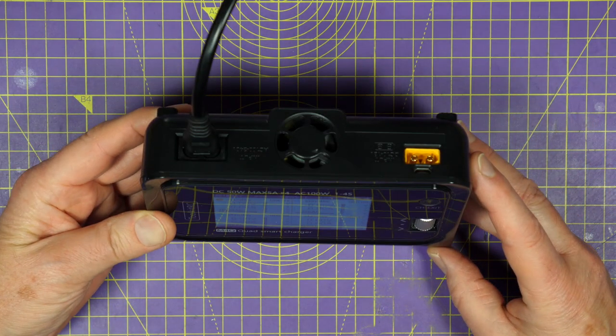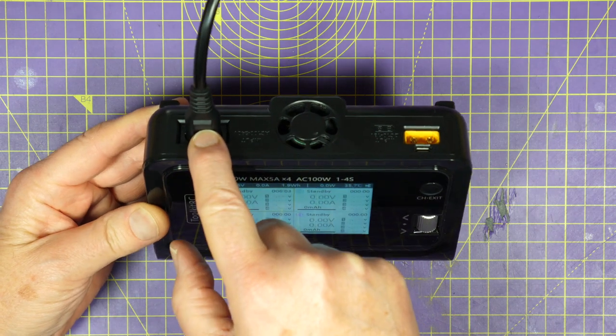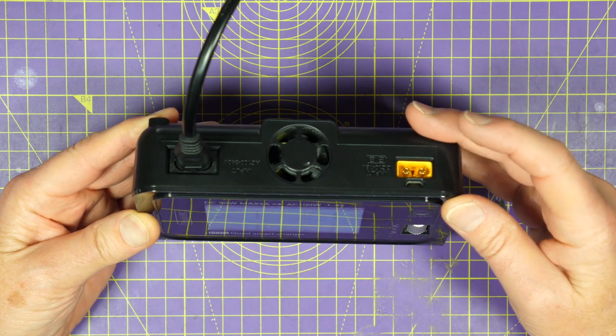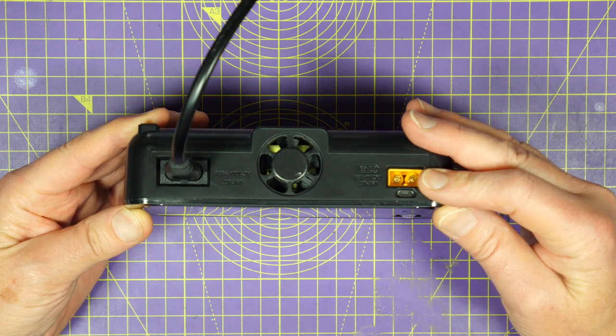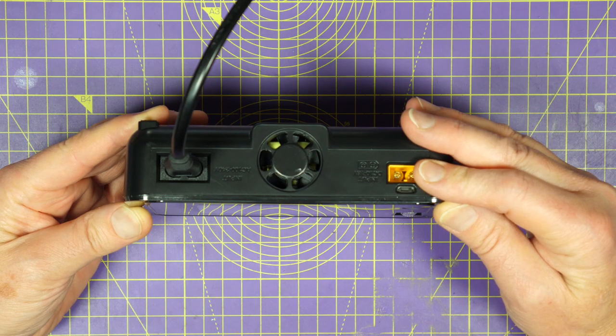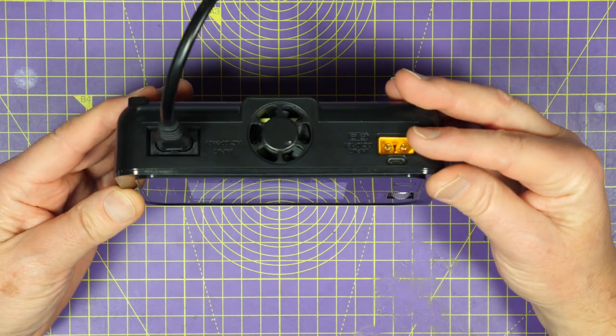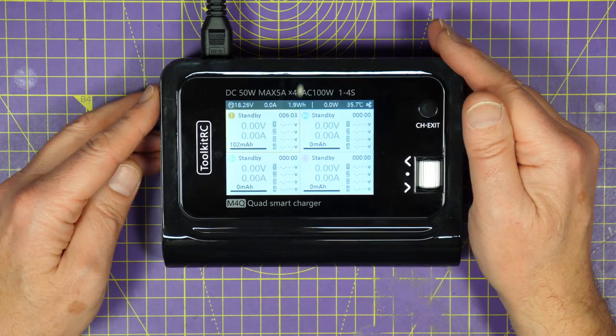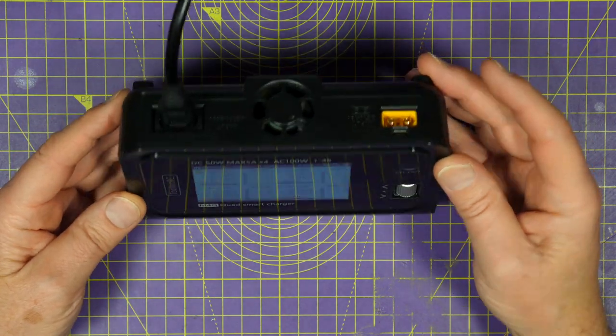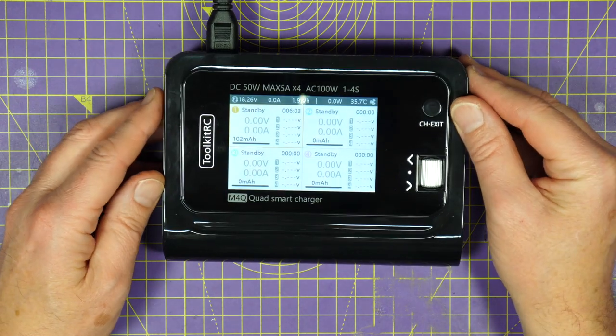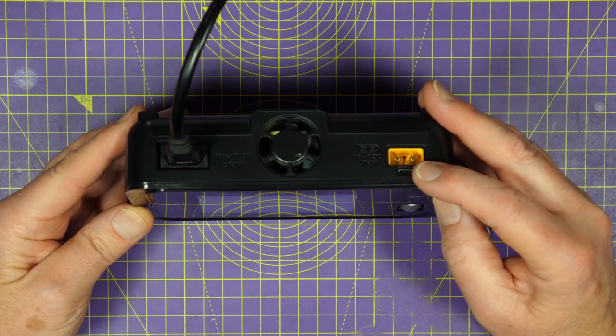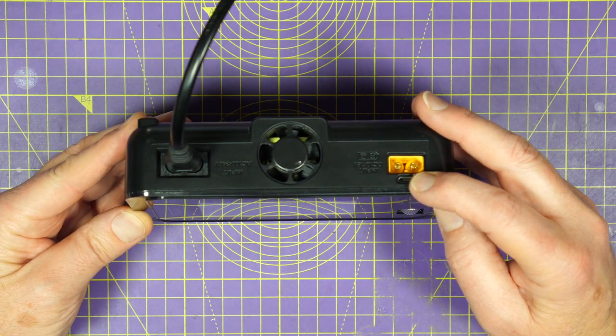On the back here, you've got the mains input, which auto-switches between 110 to 240 volts, and there's a DC input using an XT60, which is rated at 10 to 18 volts at a maximum of 20 amps. Basically, the internal power supply is 100 watts, and if you power this off 18 volts DC and 20 amps, this is good for 200 watts charging power. There's also a little micro USB up here for doing firmware updates.